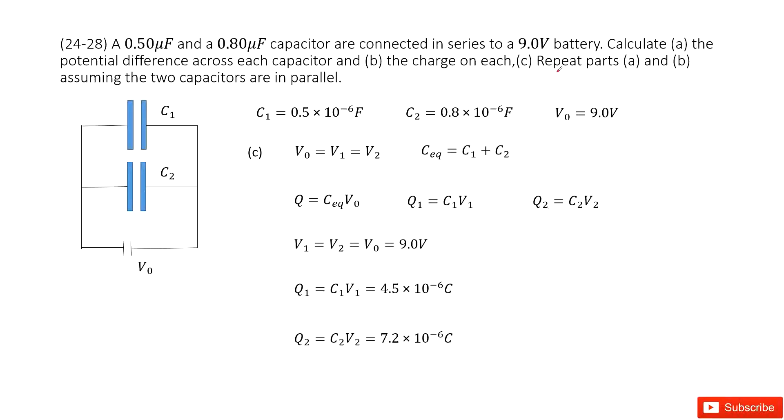The third part tells you to repeat for parts A and B. In this case, the two capacitors are in parallel connection. For parallel connection of C1 and C2, the potential difference V1, V2 equal V0. The potential difference equals. So we can write V1 equals V2 equals V0, just 9 volts. This is parallel connection.